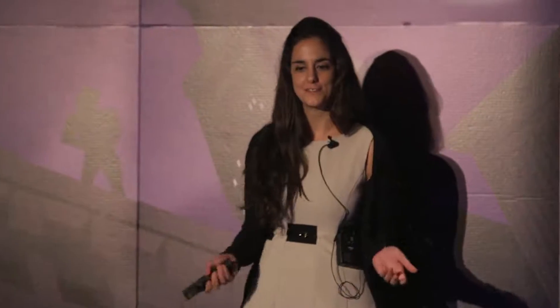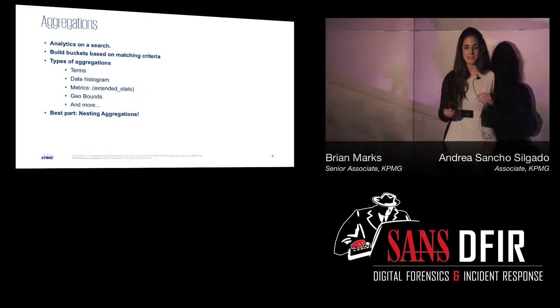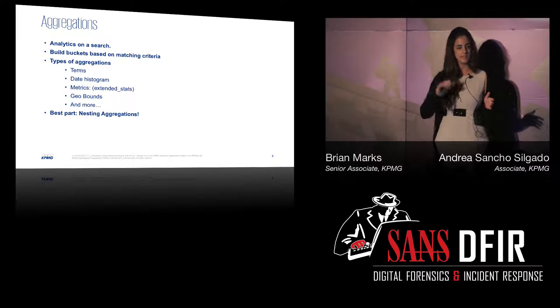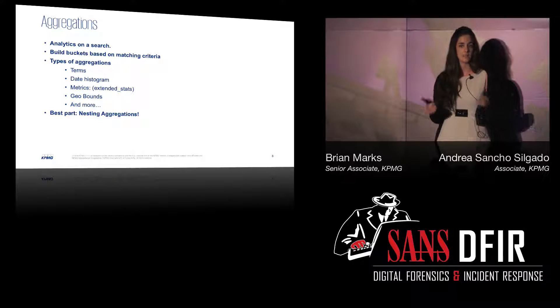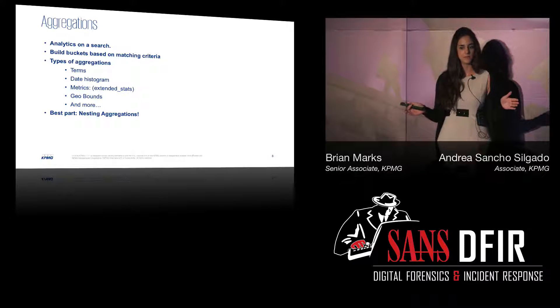Now that we can make a query, Andrea is going to show us what we can do with that and do some really cool analysis. So — aggregations. Why do we use aggregations? Aggregations let us do analytics on a search. They are performed at search time and the way they work is to build buckets, classifying all your data entries in Elasticsearch. There are so many types of aggregations you can use — for example, terms aggregations are based on a field and take into account all the possible values that field can have within your dataset. Then you have the date histogram to get a really nice timeline overview of your case.